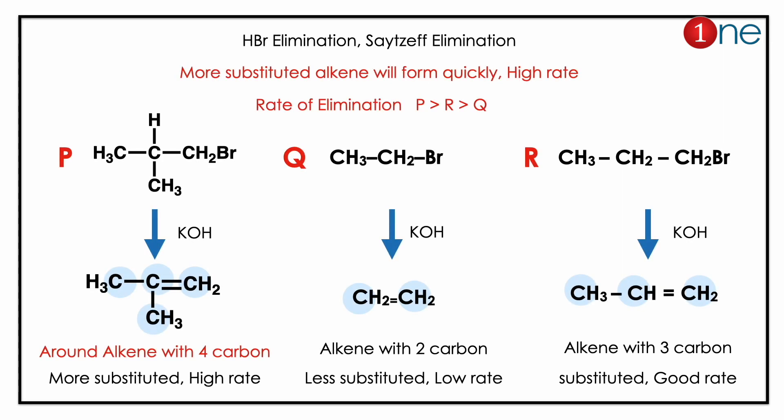Basically, you're doing elimination — an E2 elimination. In E2 elimination, the most substituted alkene will form quickly; that gives a higher rate. So let us count the carbons around the double bond — that determines the substitution.